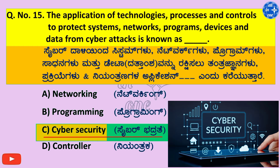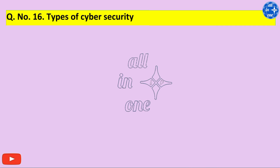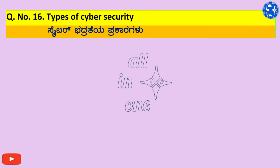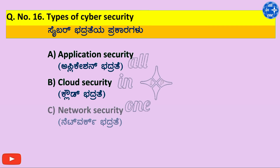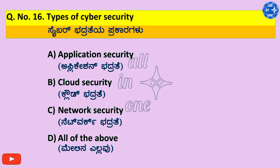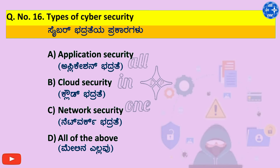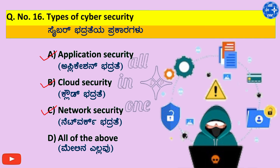Question number 16. Types of Cyber Security: A. Application Security, B. Cloud Security, C. Network Security, D. All of the above. Right answer is D. All of the above — Application Security, Cloud Security, Network Security.